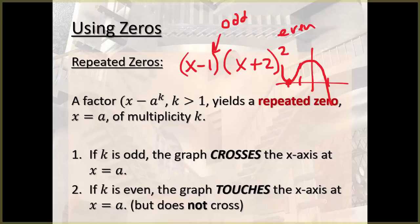All right. So the graph comes down and touches at negative 2 but it crosses at 1. It does that because the multiplicity of 1 is odd and the multiplicity of 2 is even.